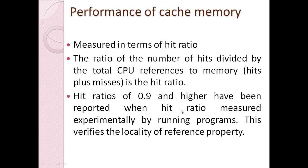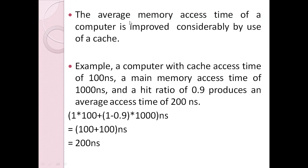When experimentally observed, a hit ratio of 0.9 also proves that programs have the property of locality of reference — if this property did not exist, such a high hit ratio could not be achieved experimentally. To compute average access time, let us take an example: suppose the cache access time is 100 nanoseconds and the main memory access time is 1000 nanoseconds, with a hit ratio of 0.9.